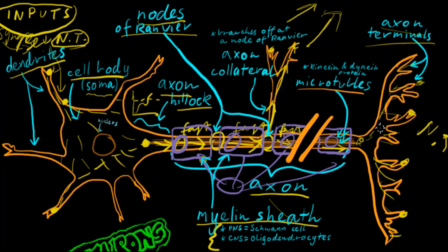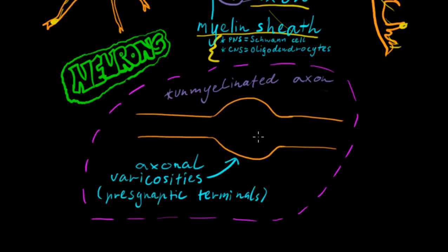Not all neurons have this myelinated structure. Some don't have a myelinated axon, these are unmyelinated axons, and they're a little bit special because they can have these things called axon varicosities.